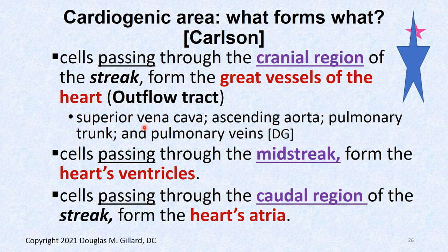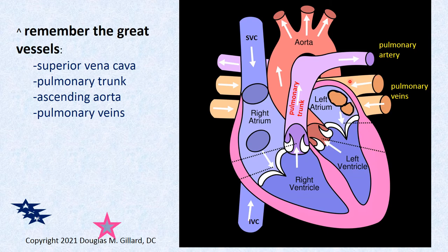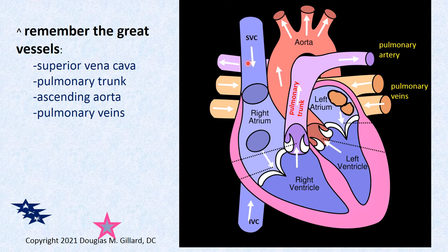Cells passing through the middle part of the streak form the heart's ventricles — right and left ventricles. Cells passing through the caudal region of the primitive streak give rise to the heart's atria. Here's a cartoon view of the heart: blood comes into the right atrium, passes through the tricuspid valve into the right ventricle, ventricular systole occurs and shoots blood out the pulmonary trunk through the pulmonic valve, then through the pulmonary arteries — deoxygenated blood going through arteries into the lungs to pick up oxygen.